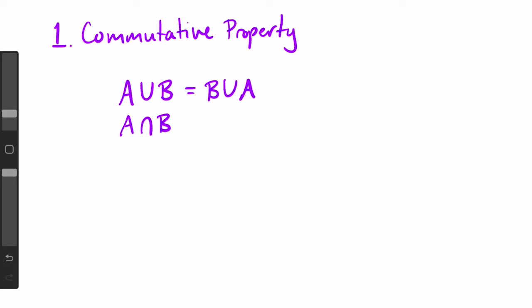Now for some algebra. The first property is the commutative property and it works exactly the same as in regular algebra. It states that A union B equals B union A and A intersect B equals B intersect A. And that makes sense, right? The set of elements in A or B, or A and B, is the same no matter what order A and B are in.